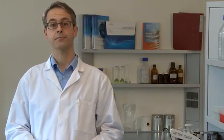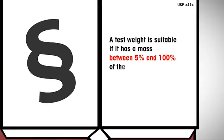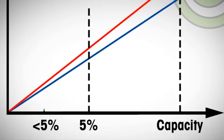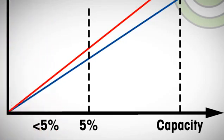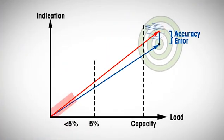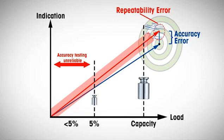So what test weight should be used for accuracy testing? A test weight is suitable if it has a mass between 5% and 100% of the balance's capacity. Note that the current widespread practice of accuracy testing with small weights at the working point is not allowed anymore. At this lower end of measurement range, repeatability is the dominant error and dwarfs the corresponding accuracy error. Hence, for reliable testing of accuracy, a weight between 5% and 100% of the capacity must be used.